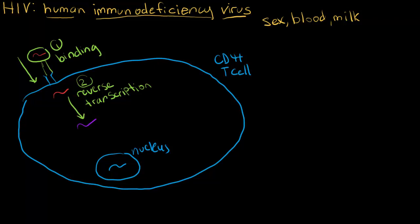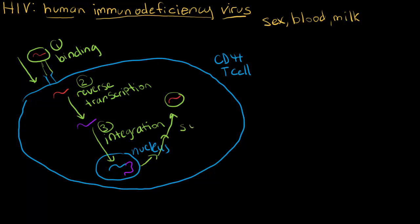That modified DNA then goes into the nucleus, where it integrates with the human DNA — that process is called integration. From there, the cellular machinery that normally makes human proteins is used to replicate the viral DNA and make new viral particles. After multiple steps, we end up with new HIV particles — that's synthesis.